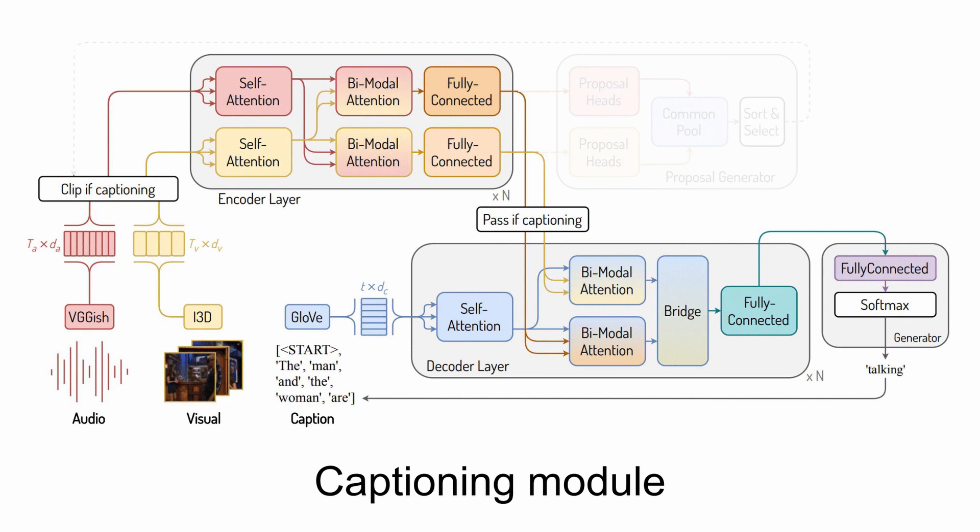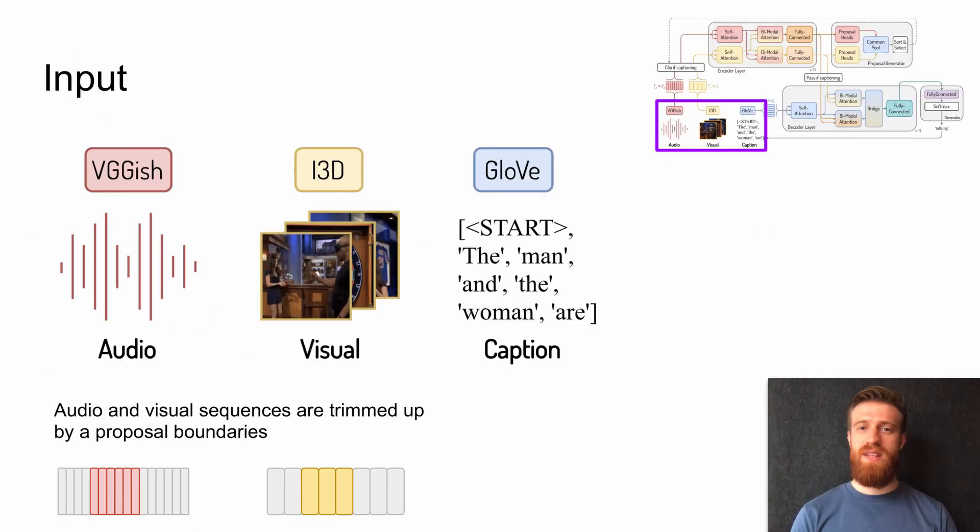The captioning module consists of two major parts: a bimodal encoder and a bimodal decoder. It inputs audio and visual feature sequences, along with the embedding sequence of previously generated caption words, and outputs the distribution for the next word. We use a pre-trained VGG-ish net to extract audio features, and a pre-trained I3D net for visual features. Before going into the bimodal encoder, audio and visual sequences are trimmed up by proposal boundaries. We used pre-trained global vector embeddings to represent each word-level token in the caption.